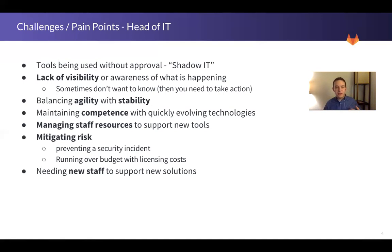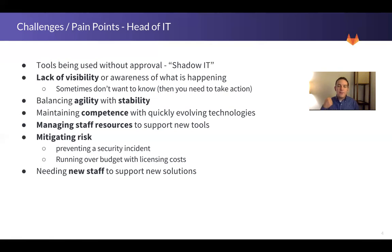The IT organization, like many personas, wants to balance agility with stability — they want the organization to move quickly but also want things stable. In general, most folks in the head of IT role care a bit more about the stability side of that. They also want to maintain competence, which is a pain point. Technologies are always quickly evolving and things are shifting so fast, making it very difficult for IT leaders to ensure their organization is always trained and competent to support the latest technologies.